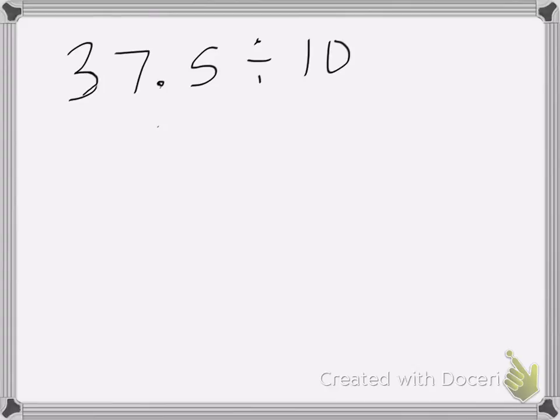Now since we're dividing by 10, that means my number here is going to be less than 37.5. So to do that, all we have to do is move this decimal place one place to the left.